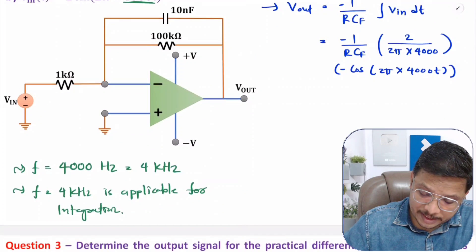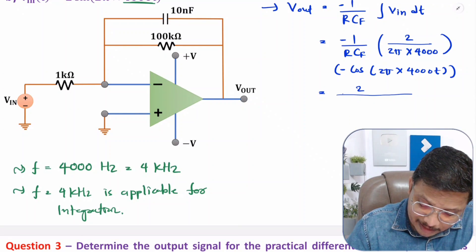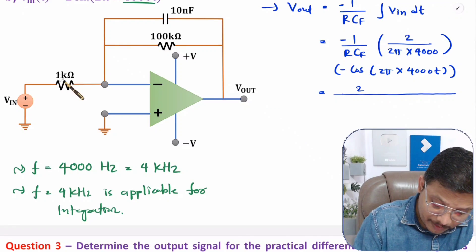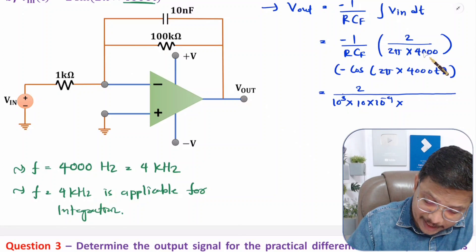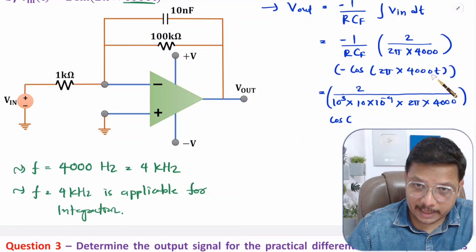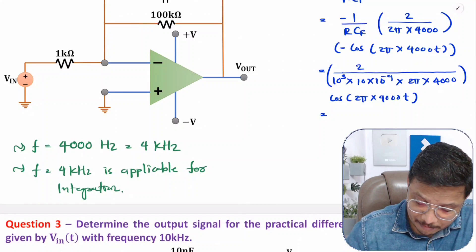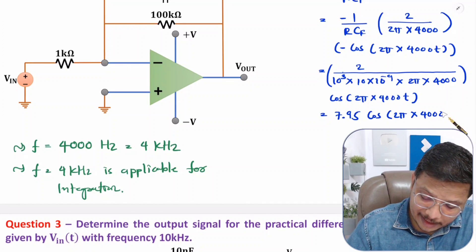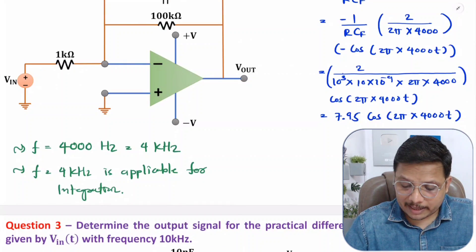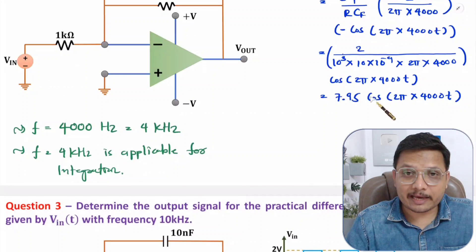Now substituting values: the two negatives give a positive. In the numerator we have 2; in the denominator we have R = 1 × 10³, Cf = 10 × 10⁻⁹, and 2π × 4000. Solving the denominator in a calculator gives V_out = 7.95 · cos(2π·4000·t). So the output after integration of the given input is 7.95·cos(2π·4000·t).